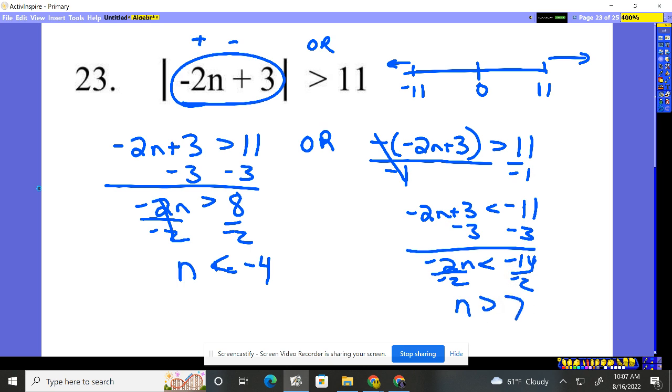So n is bigger than 7. We have n less than negative 4, or n could be bigger than 7, shooting in different directions. For the answer, you say n is less than negative 4, or n is bigger than 7. That's problem 23.